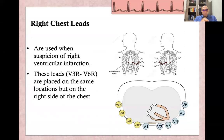Additional leads can be ordered, such as right chest leads. We perform right chest leads when we suspect right ventricular infarction, which usually accompanies inferior wall myocardial infarction. We move V3, V4, V5, and V6 to the same positions on the right side of the chest — V3R, V4R, V5R, and V6R. This gives a view of the right ventricle and is much more specific for right ventricular infarction. It is mandatory when right ventricular infarction is suspected in inferior wall myocardial infarction.